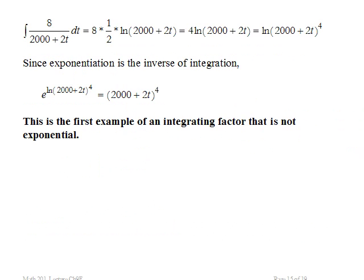So I'm going to carry out that integration just independent of the exponent. If I integrate 8 divided by 2,000 plus 2t dt, the answer is a natural log. 8 times 1 half, that's from substitution here, times the natural log of 2,000 plus 2t. So that's 4 times the natural log of 2,000 plus 2t, or I could say natural log of 2,000 plus 2t raised to the 4th power.